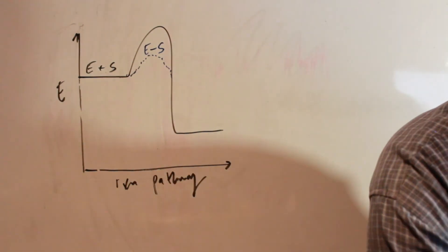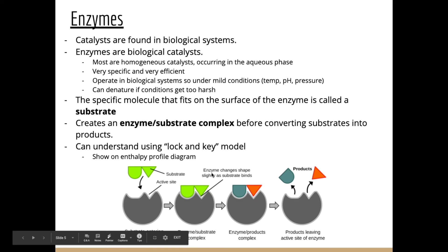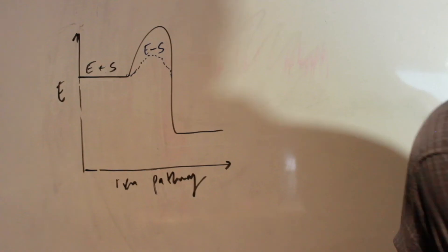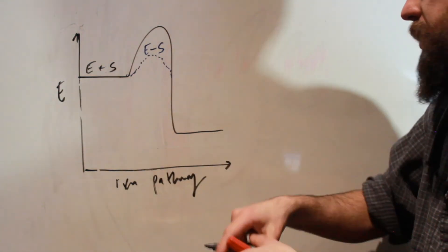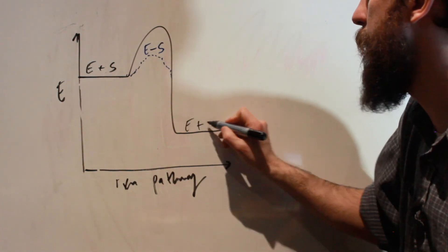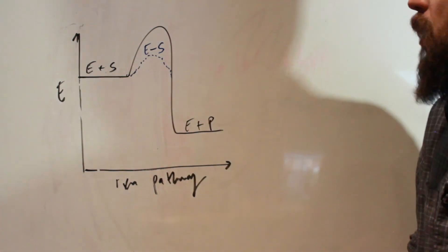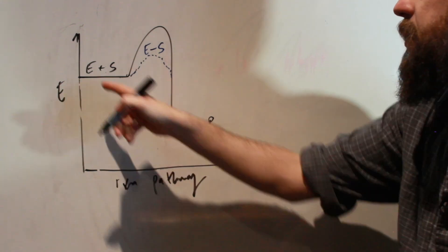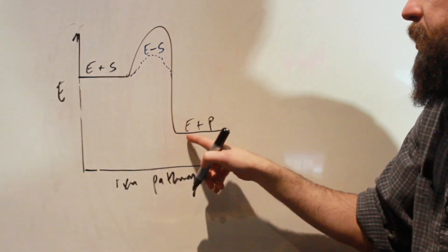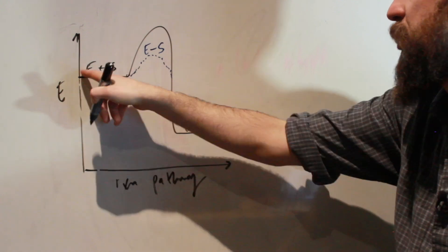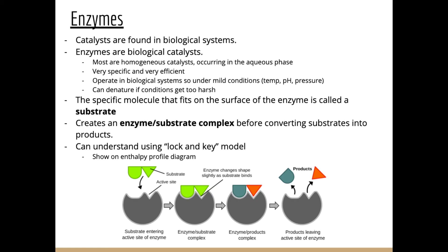The enzyme bonds to the substrate, allowing the reaction to occur at lower energy by offering an alternate mechanism. This corresponds to the central points on the enthalpy diagram where the enzyme is bonded to the substrate to form the complex. The reaction occurs, we get an enzyme-product complex, and then the enzyme remains unchanged at the end — confirming that the enzyme acts as a catalyst because it hasn't been consumed in the reaction.